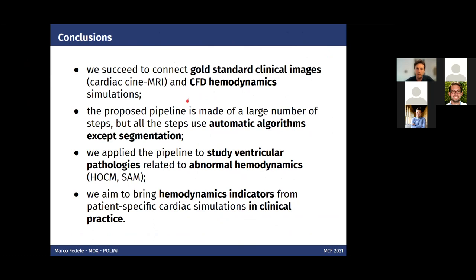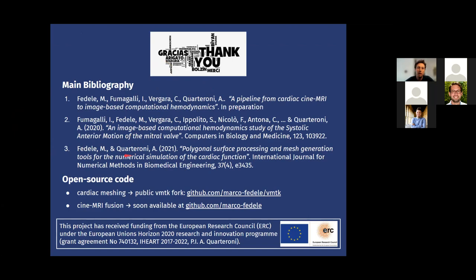In conclusion, the pipeline successfully connects standard clinical cine MRI images to CFD hemodynamics, enabling study of pathologies linked to abnormal hemodynamics and computation of hemodynamic indicators for potential clinical practice. Most parts of the pipeline use automatic algorithms. Open source code for cardiac meshing is available on a GitHub repository, and a paper with the full pipeline code is in preparation.